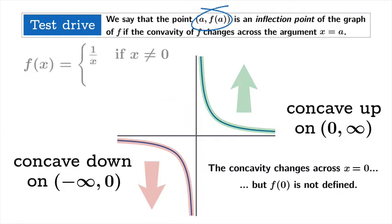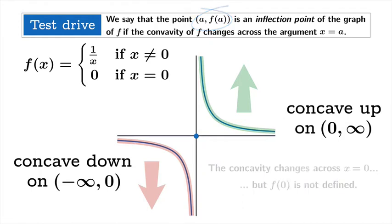Notice, however, that you could redefine f to be the reciprocal function as long as the argument is not zero, but then we're going to redefine the function to be zero at zero. Now our objection vanishes. The function value is perfectly well defined, and we still have our transition in concavity.